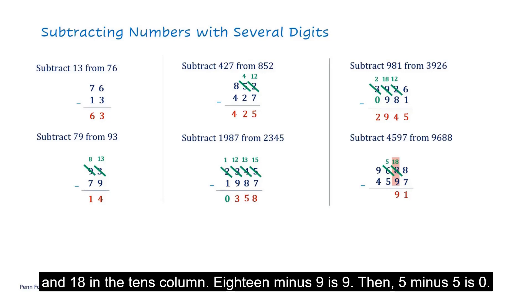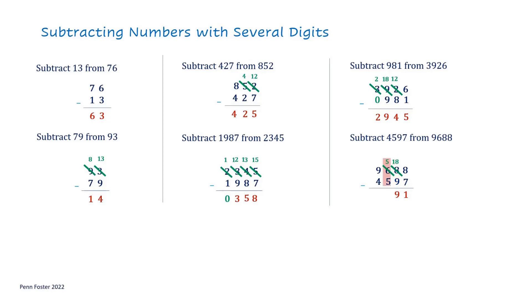Then, 5 minus 5 is 0. The last step is 9 minus 4. It's 5. The answer is 5,091.